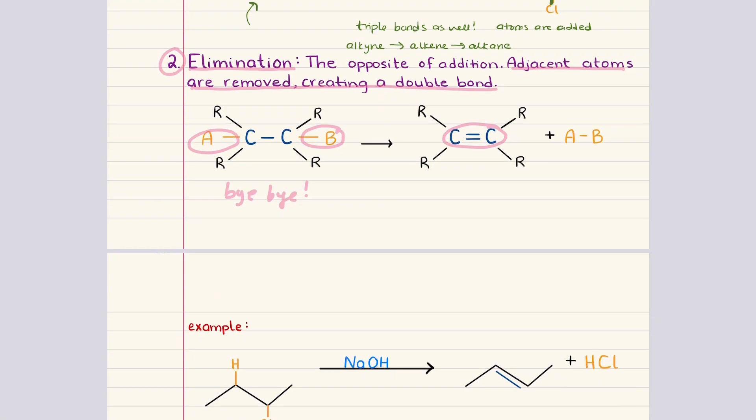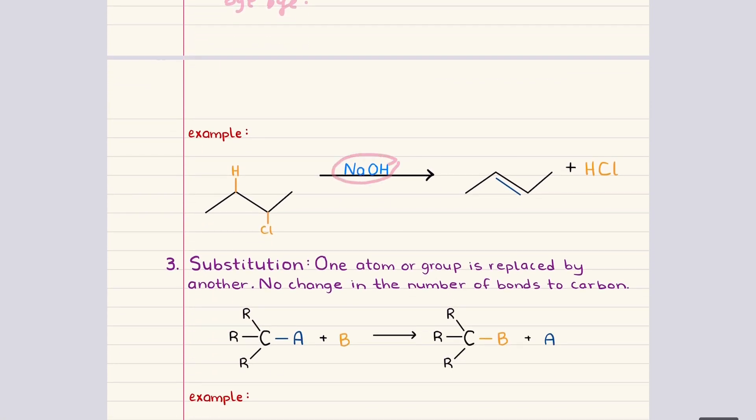The example provided uses sodium hydroxide as the reagent. Sodium hydroxide acts as a strong base, removing a hydrogen from one of the carbons, while another group, in this case chlorine, leaves from the adjacent carbon. Once those groups are removed, the molecule forms a carbon-carbon double bond and produces hydrogen chloride as a byproduct. This pattern is characteristic of elimination, and it is the mirror image of what we observed in addition.